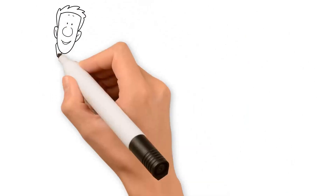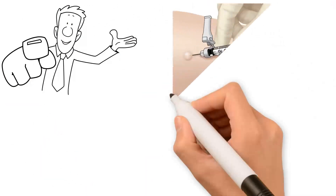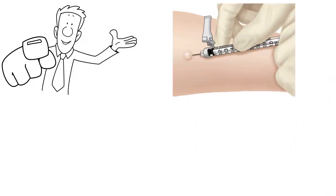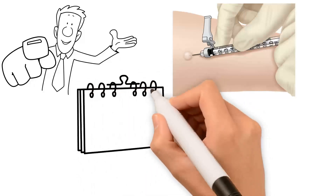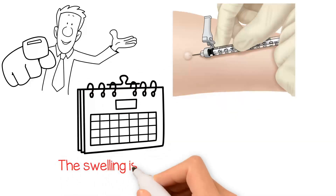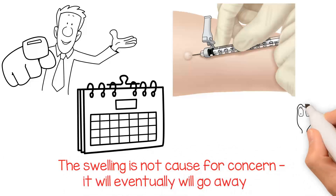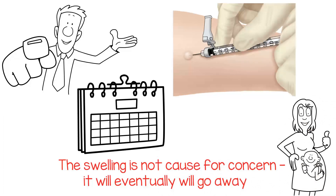Here's what you can expect during a TB skin test. A tiny needle is used to inject purified protein under the skin. A reaction to the protein is measured two to three days later by a slight swelling at the injection site. The swelling is not cause for concern and will eventually go away. The TB skin test is not harmful or infectious and is safe during pregnancy.